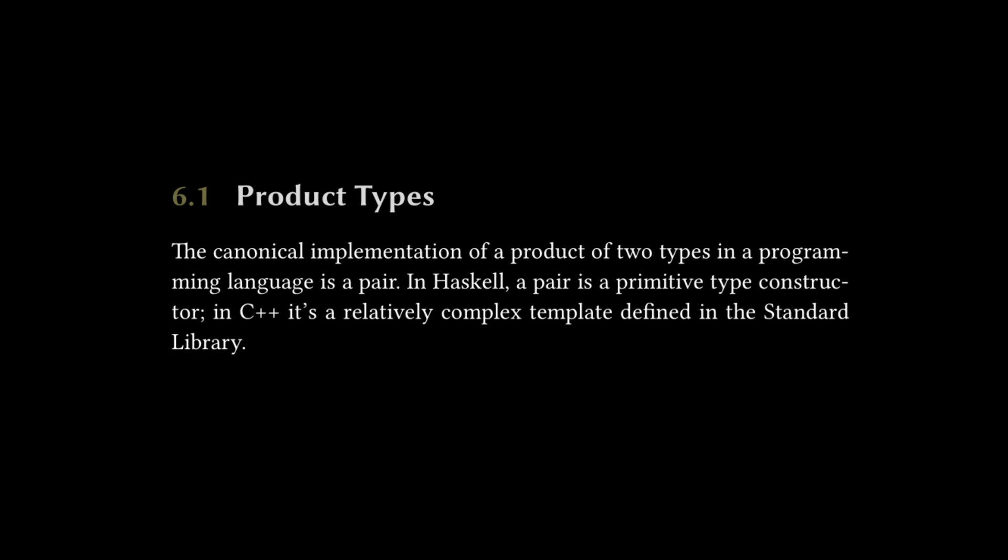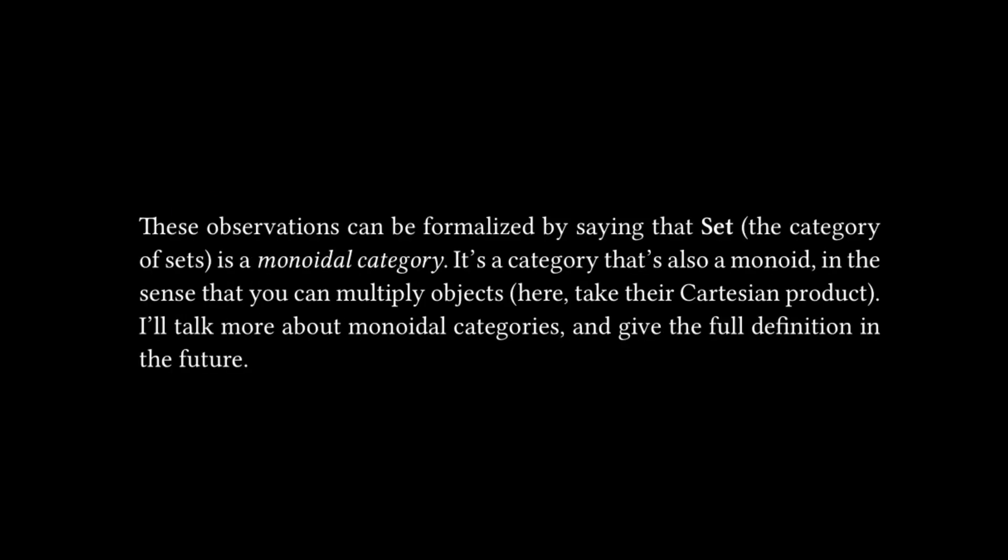So later on in this subsection, it goes on to remark that these observations, the observations having to do with the isomorphism between different types of pairs, can be formalized by saying that Set, the category of sets, is a monoidal category. It's a category that's also a monoid in the sense that you can multiply objects. Here, take their Cartesian product. I'll talk more about monoidal categories and give the full definition in the future. So I thought this is worth highlighting when it's talking about the category of sets being a monoidal category.